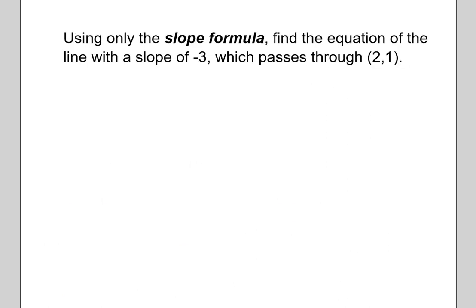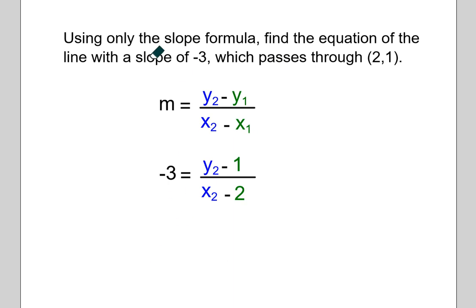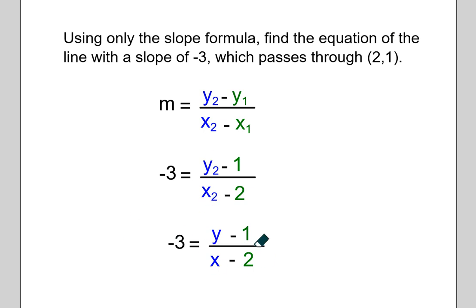Let's try another exercise to drive this home using only the slope formula. We have a slope of negative 3, so we can plug that in right where M is. We also have a point — the coordinates 2 comma 1. So I plug those into the formula.